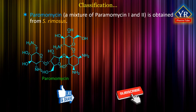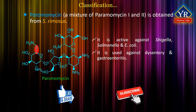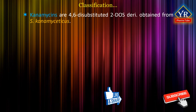The use of neomycin in a number of topical creams and lotions is usually in combination with bacitracin and polymyxin. Paramomycin is a mixture of paramomycin I and paramomycin II and is obtained from Streptomyces rimosus. It is active against clinically important Shigella, Salmonella and E. coli.